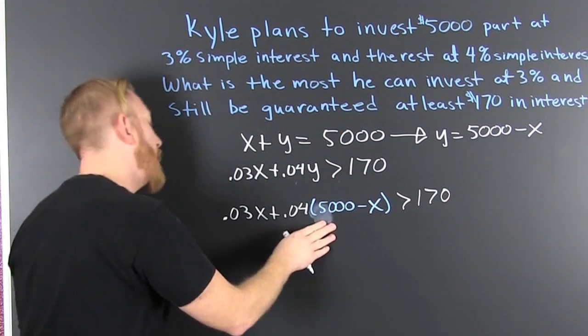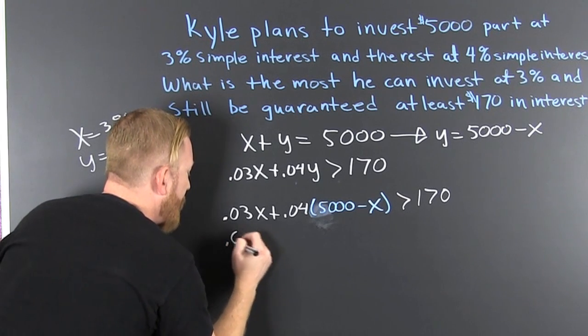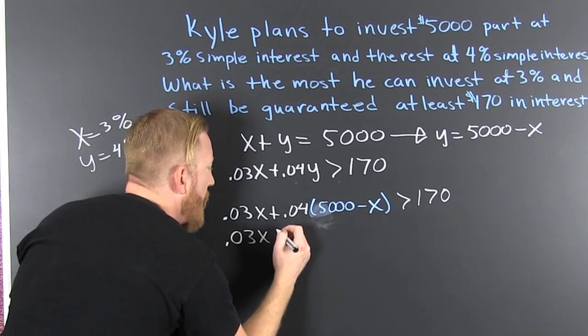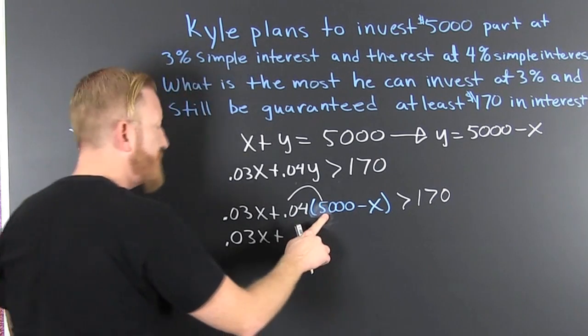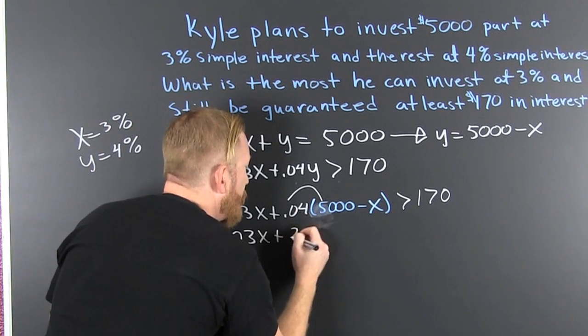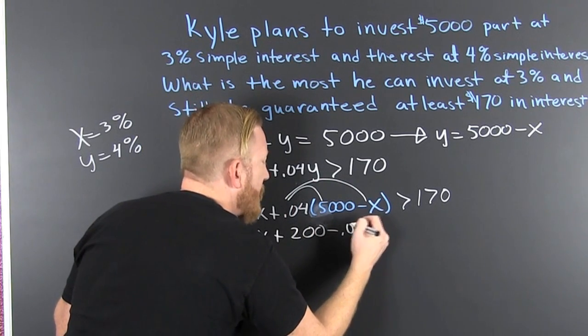Now we go and distribute that in there. 0.03X + 4 times 5 is 20, so that's 200 - 0.04X. That needs to be bigger than 170.